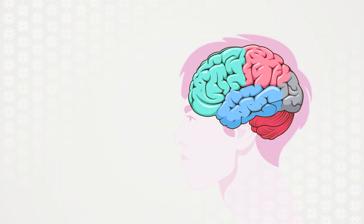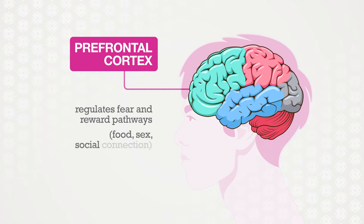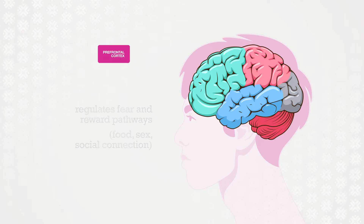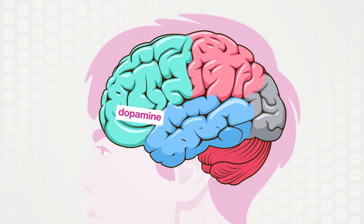Let's take a look at how substance use affects the brain. The part of the brain located behind the forehead is called the prefrontal cortex. One of its functions is to regulate the fear and reward pathways in our brains. The reward system is triggered by things like food, sex, and social connection — things that affect our survival. When we engage in these activities, a chemical called dopamine is released into the brain. Dopamine influences our mood and makes us feel pleasure.